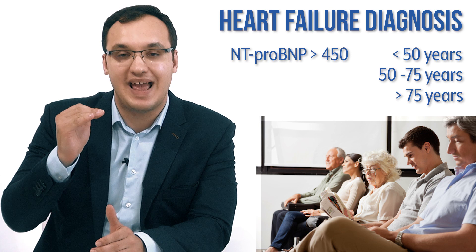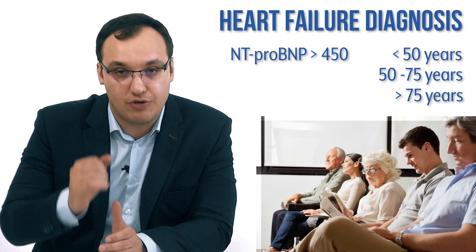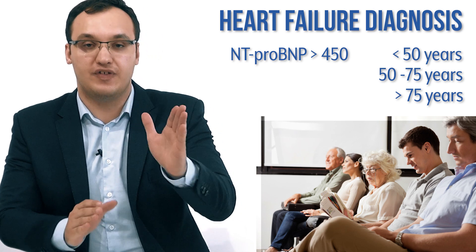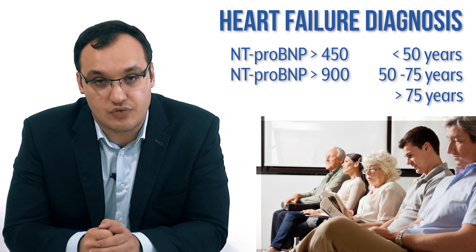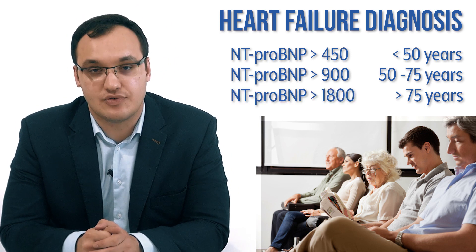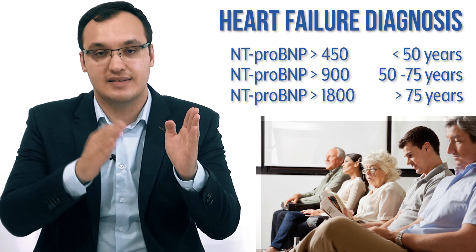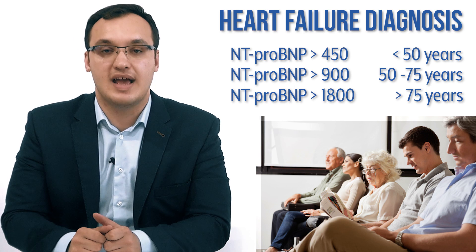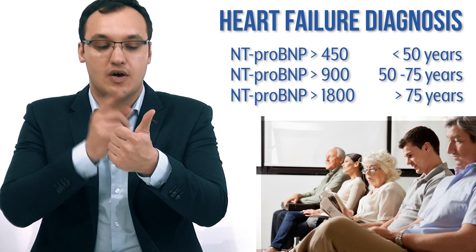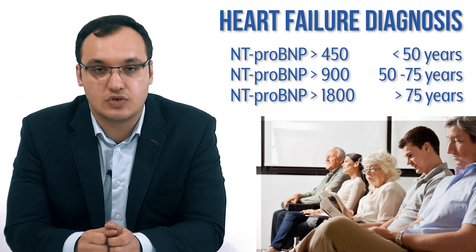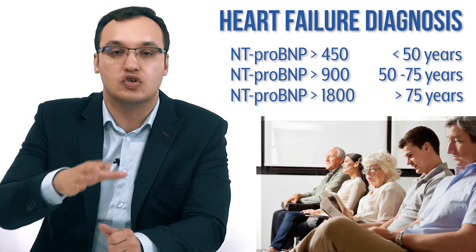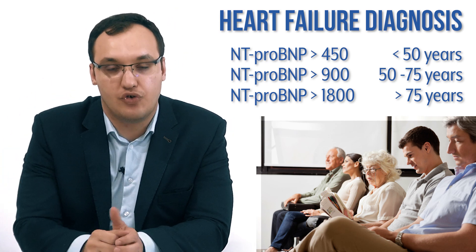We use a cutoff of NT-proBNP greater than 450 for patients under 50, greater than 900 for ages 50–75, and greater than 1,800 for those above 75. It's easy to remember: 450, double it to 900, double it again to 1,800. Just remember the ages 50 and 75, and the starting value of 450, then double it.